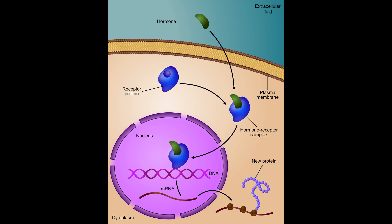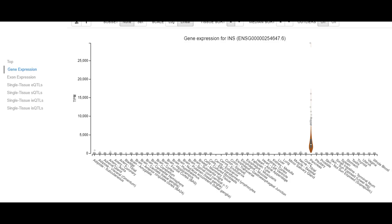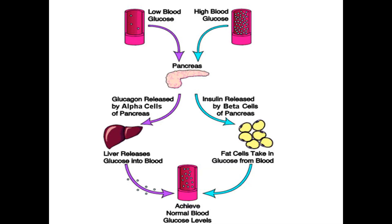For example, an enzyme is only required when its substrates are available. In multicellular organisms with differentiated cells, the expression of some genes must be cell-specific. A good example of this is the insulin gene. Even though almost every cell in your body possesses this gene, it is only expressed in beta cells of the pancreas. The level of expression must also be able to change in response to both internal and external changes, most obvious being the blood glucose level.